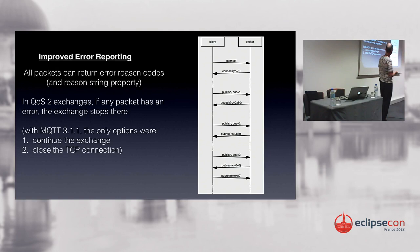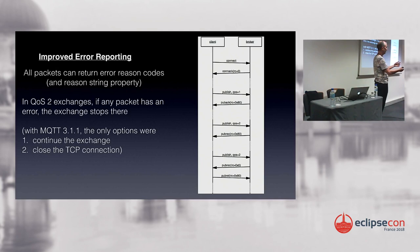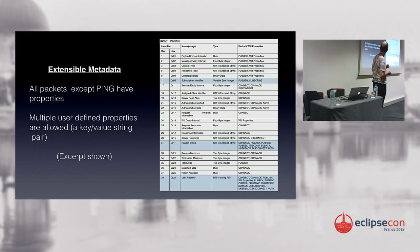For example, in the QoS 2 exchange, in version 3.1.1 and previous versions, if something went wrong in the middle of a four-packet exchange, you had only two options: terminate the TCP connection entirely, or continue the exchange to the end. In version 5, you can send the return code on any of the intermediate packets, stop the exchange, tell the receiver exactly what went wrong, and then carry on with the conversation more efficiently.